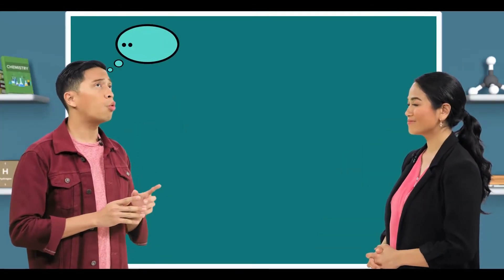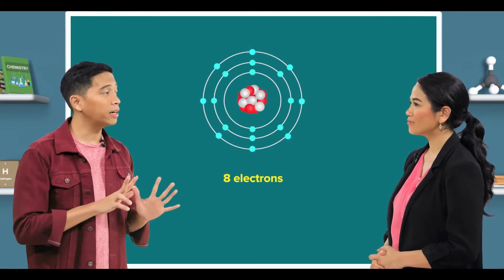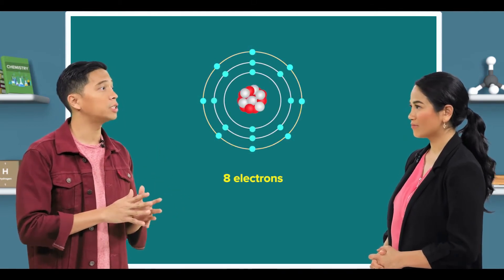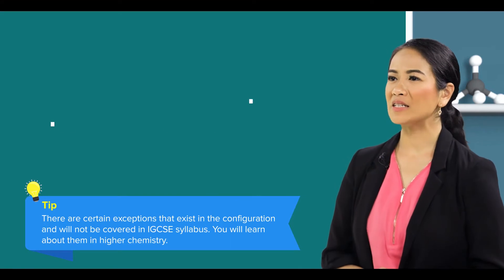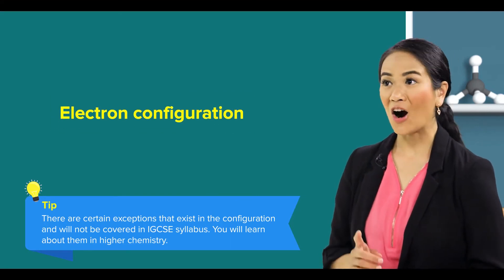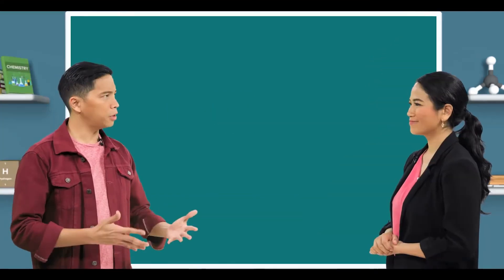Okay, so why do some books say that there can only be 8 electrons in the third electron shell, while others say that there can be 18? For this, we will need to dive deeper into electron configuration. Are you ready for that? I think it would help me understand the periodic table and atomic structures more. Okay, then here we go!